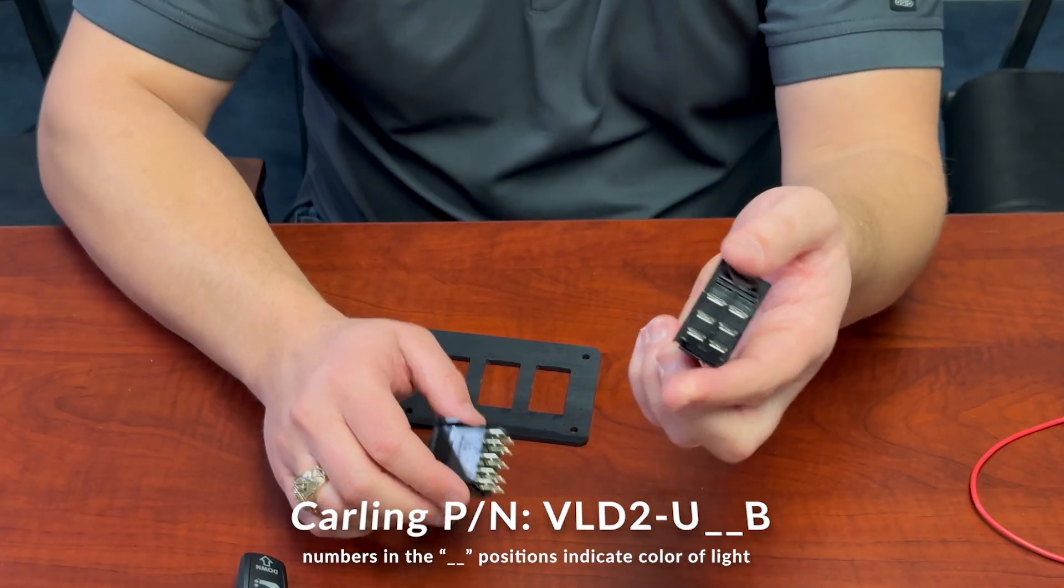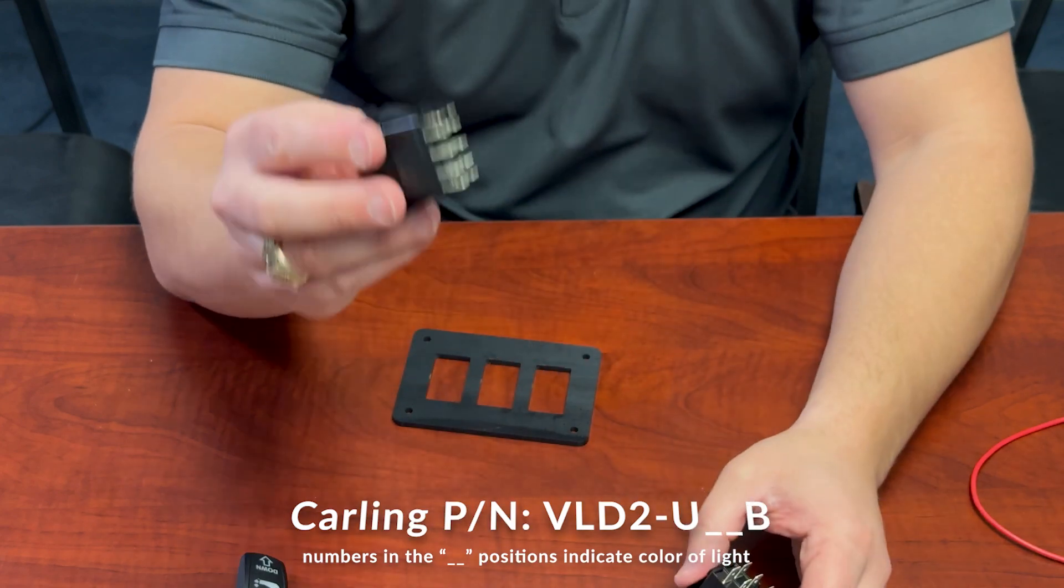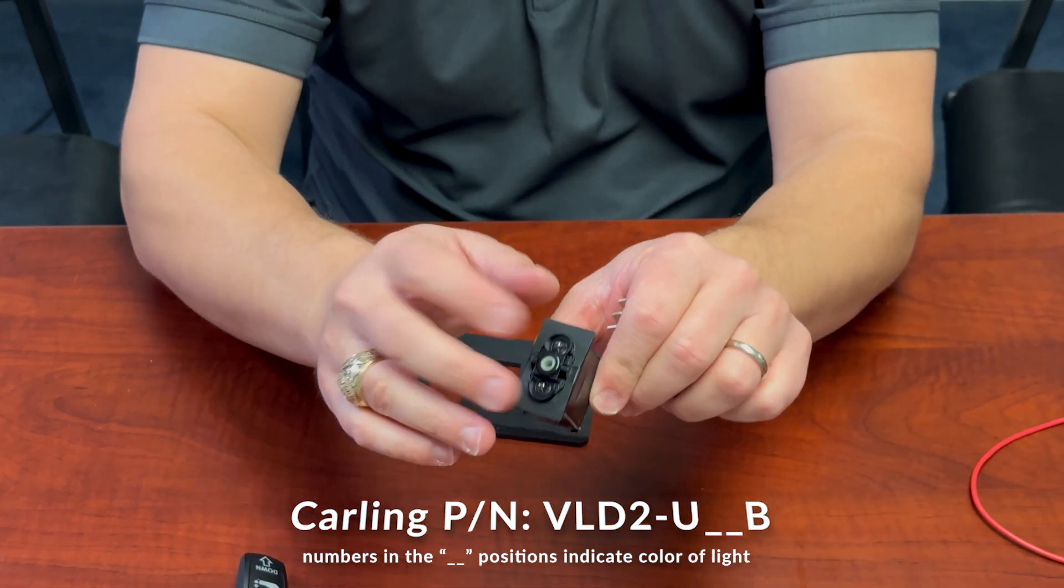So that was with an unlit switch with no lights in it. Now let's look at how to do it with a 10 terminal lit switch with two independent lights.